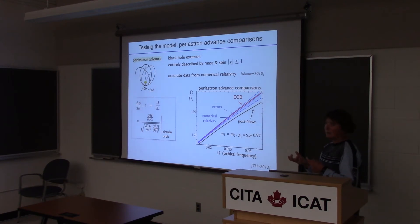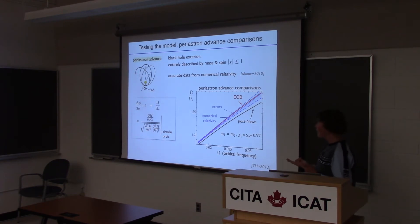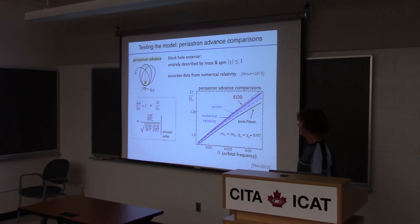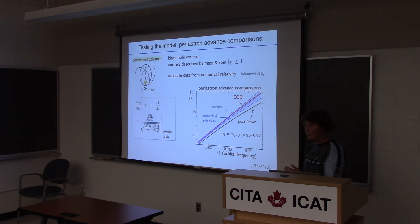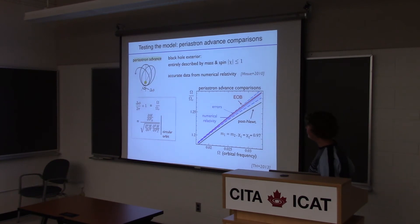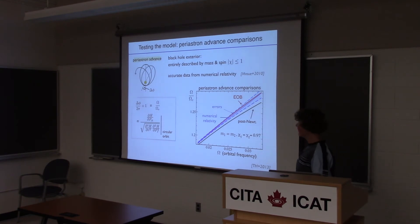For a Newtonian two-body system, the ellipse would remain the same forever. But when there are perturbations — from the spin of the small object, from third bodies, from a quadrupole moment of the Sun if large enough — that will cause the ellipse to precess. We wanted to compare this kind of effect but for black holes, not Mercury and the Sun. This was possible because Abdul and collaborators managed to compute the peri-astron precession for black holes from numerical relativity.